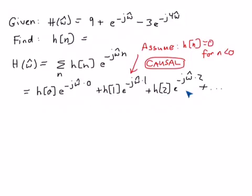Similarly, h of 2 is associated with the 2 in the exponent, etc. We could go on and on and on. So we can immediately read out, if we compare these two equations, we can use these coefficients as the values of h.